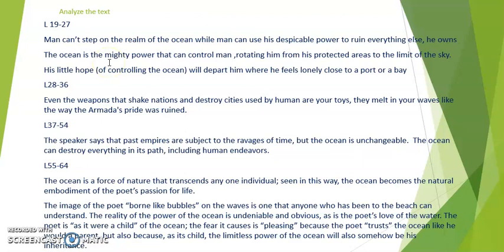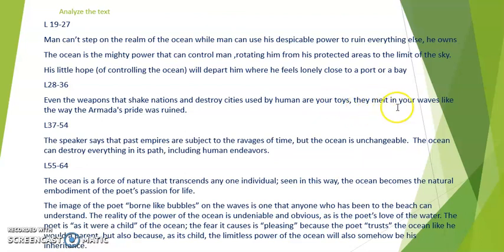From lines 28 to 36: the poet tells us that even the weapons that shake nations and destroy cities are mere toys in the hand of the ocean. They would melt in the waves of the ocean, just as the Spanish Armada's ships were ruined and defeated by the English in 1588.